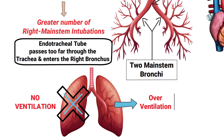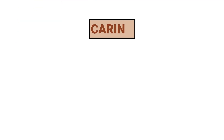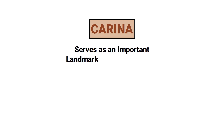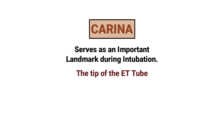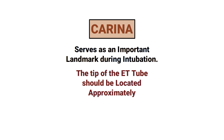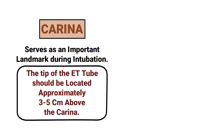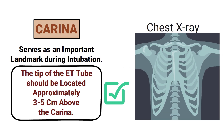Right main stem intubation would result in no ventilation in the left lung and likely over-ventilation or over-expansion in the right. The carina serves as an important landmark during intubation — the tip of the ET tube should be located approximately three to five centimeters above the carina, which can be confirmed with a chest x-ray.